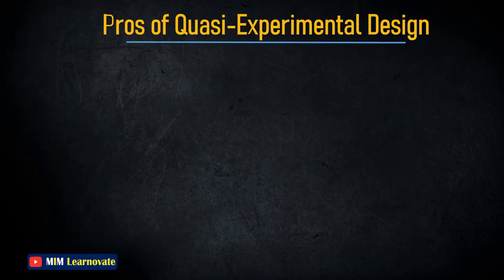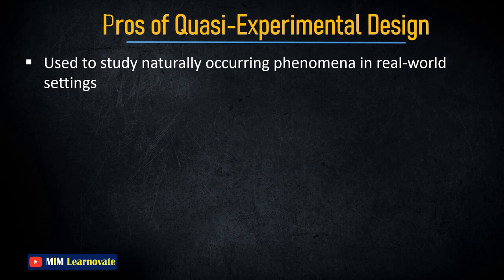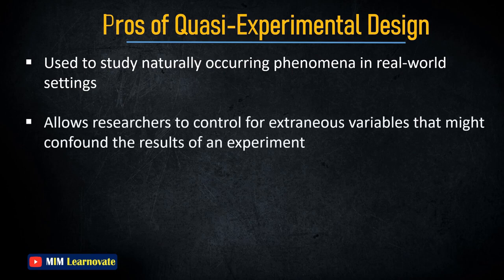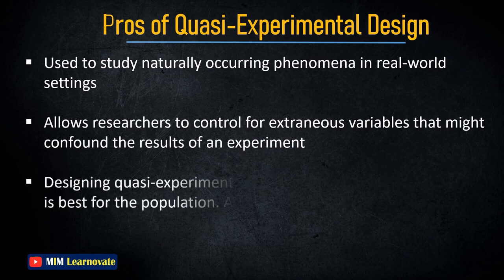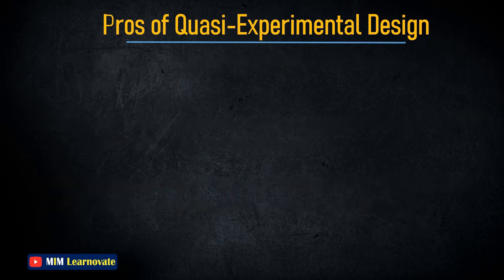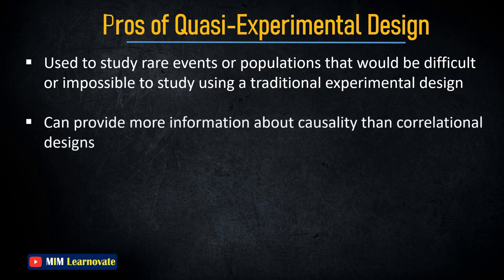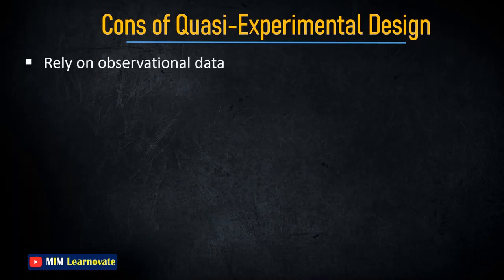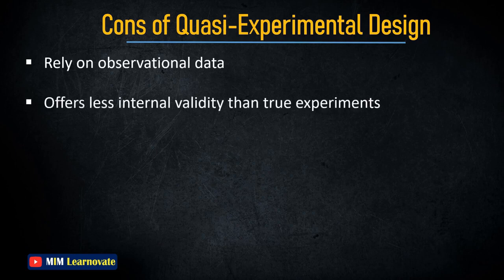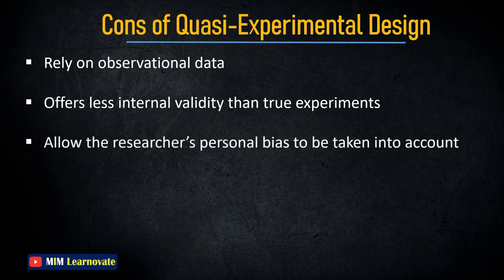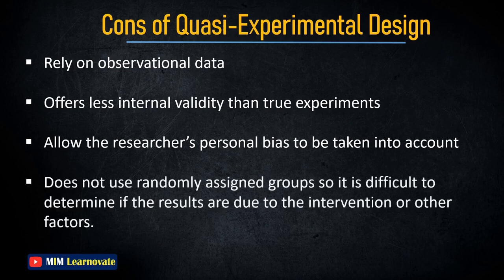Pros of Quasi-Experimental Design: it can be used to study naturally occurring phenomena in real-world settings; it allows researchers to control for extraneous variables; it is ideal for determining external validity; it can be used to study rare events or hard-to-reach populations; and it can provide more information about causality than correlational designs. Cons: it relies on observational data which can be less reliable than controlled experiments; it offers less internal validity than true experiments; it may allow researcher bias; and because it does not use randomly assigned groups, it is difficult to determine if results are due to the intervention or other factors.